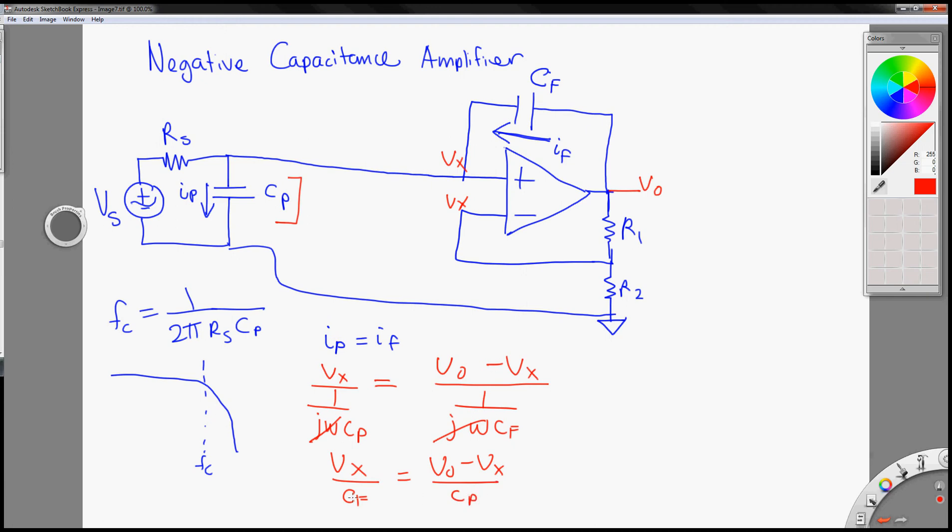And I can reduce this. So this becomes Cp over Cf, it's equal to Vout minus Vx over Vx. And this equals to Vout over Vx minus 1.